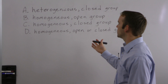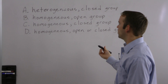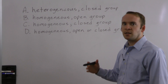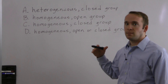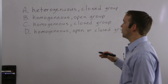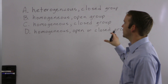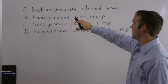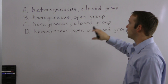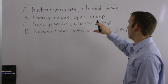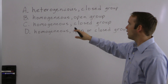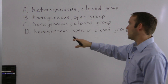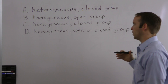Let's take a look at this one. This is a problem where you're asked to put together a group, given some details, and asked to identify what type of group it is. Is it either A, a heterogeneous closed group; B, a homogenous open group; C, a homogenous closed group; or D, a homogenous open or closed group.